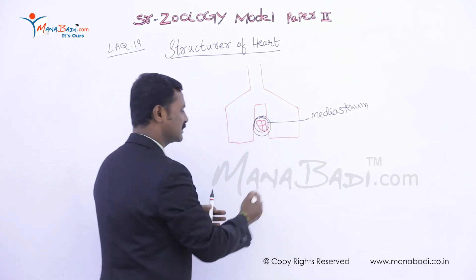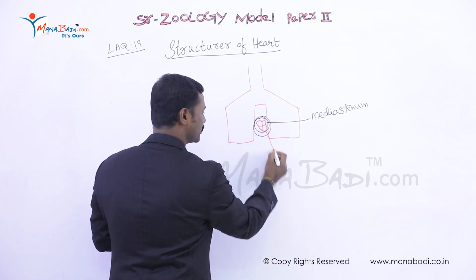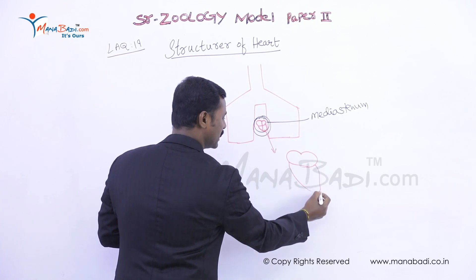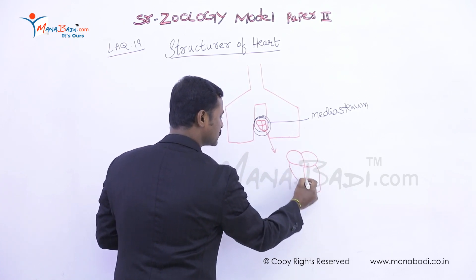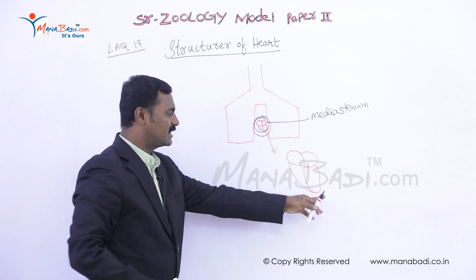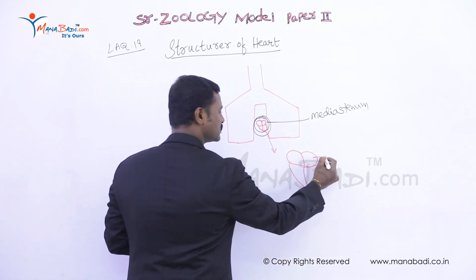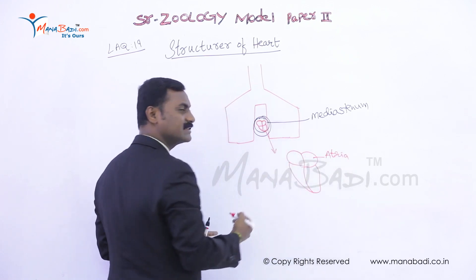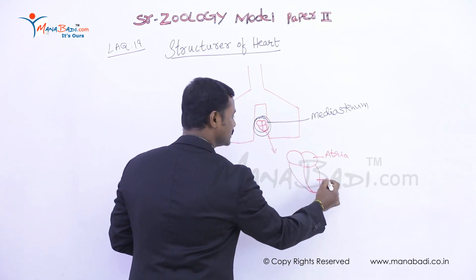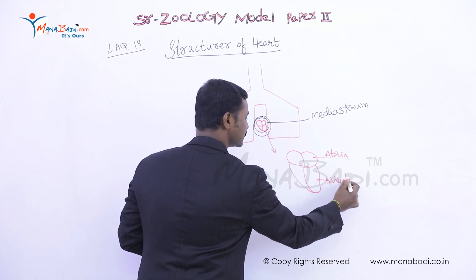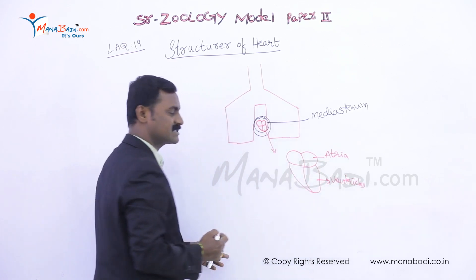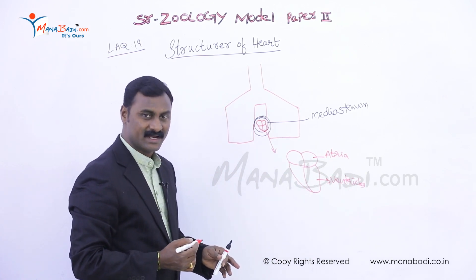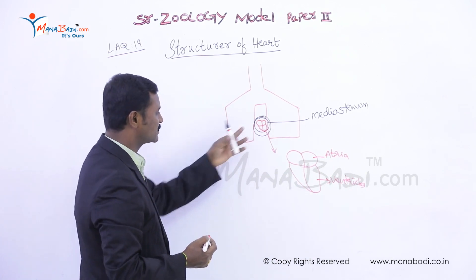The heart is slightly conical in shape. If you see the heart, the pointed apex is slightly to the left side. The upper chambers are the atria, which are on the anterior side. The lower chambers are the ventricles, which are on the posterior side. The pointed apex is slightly towards the left side.